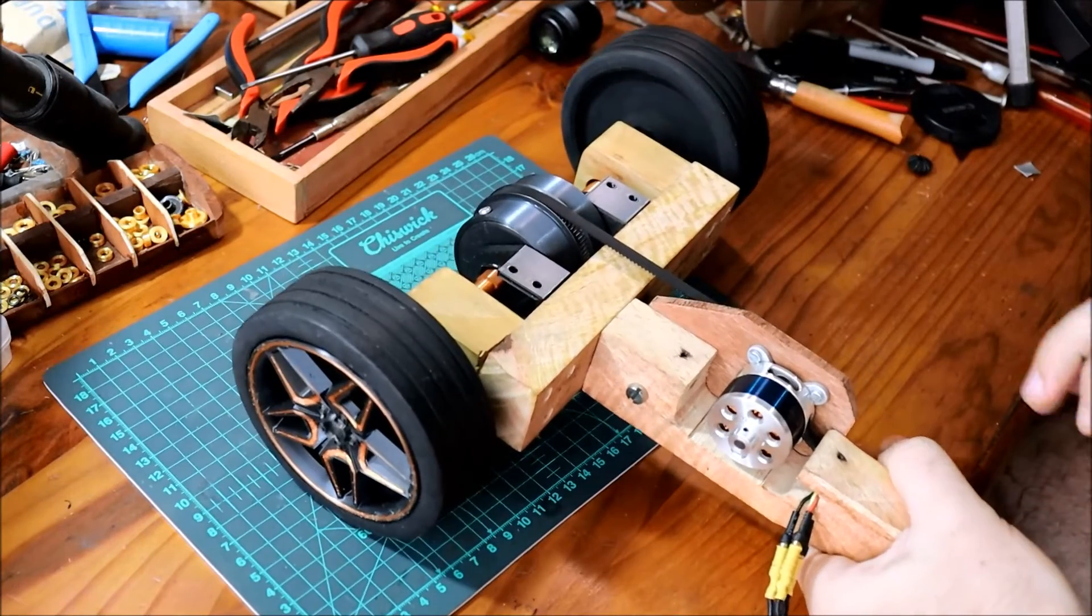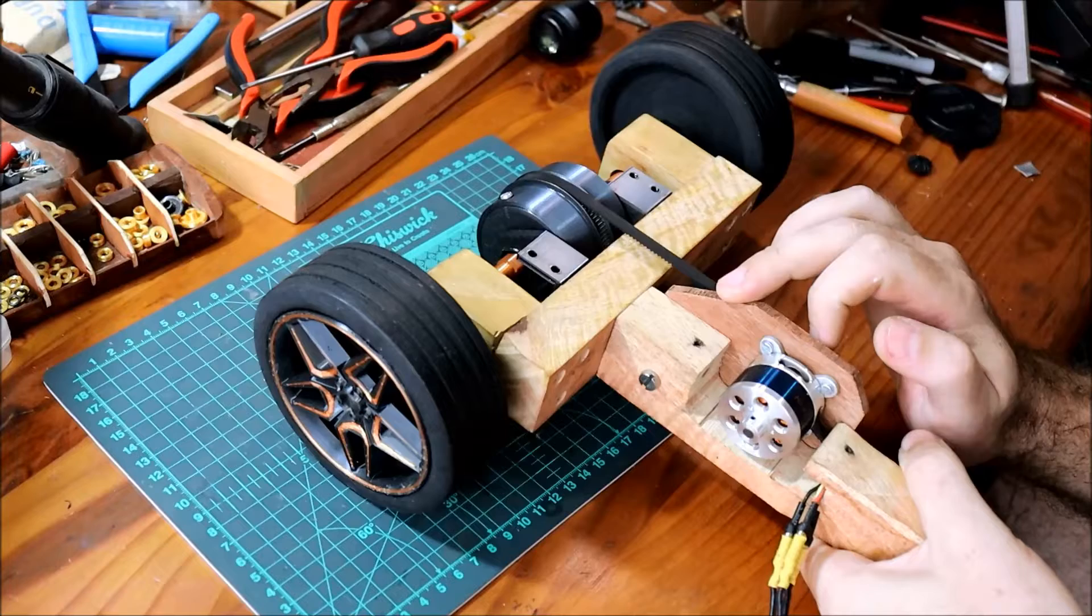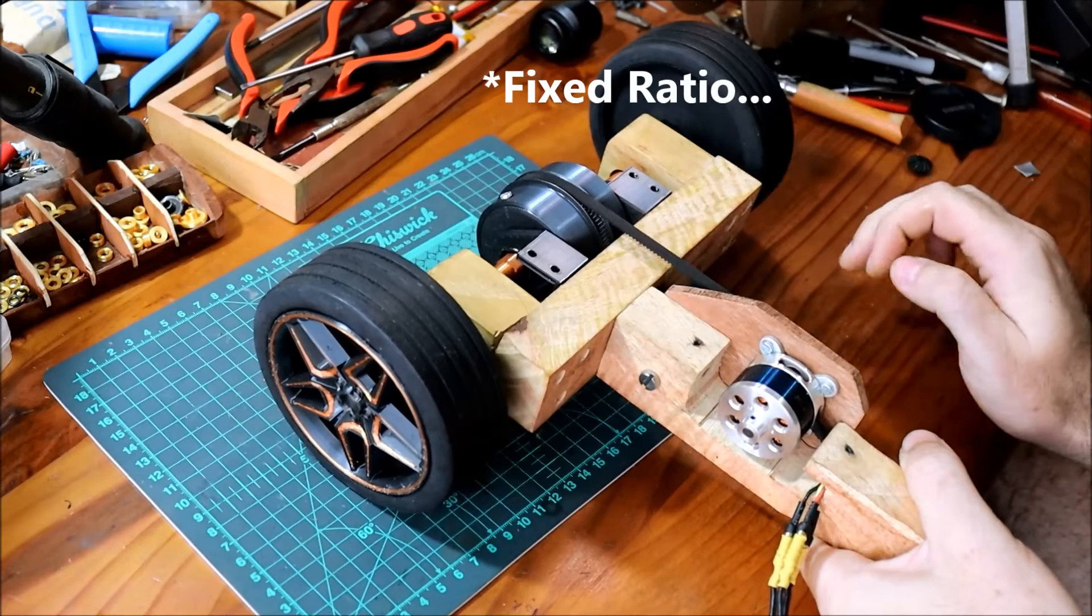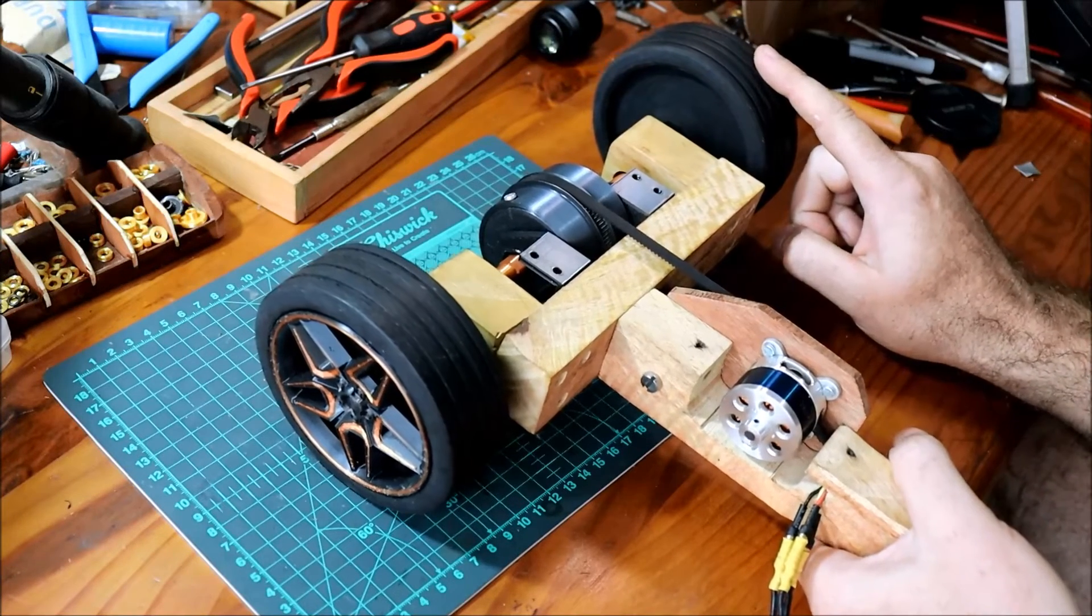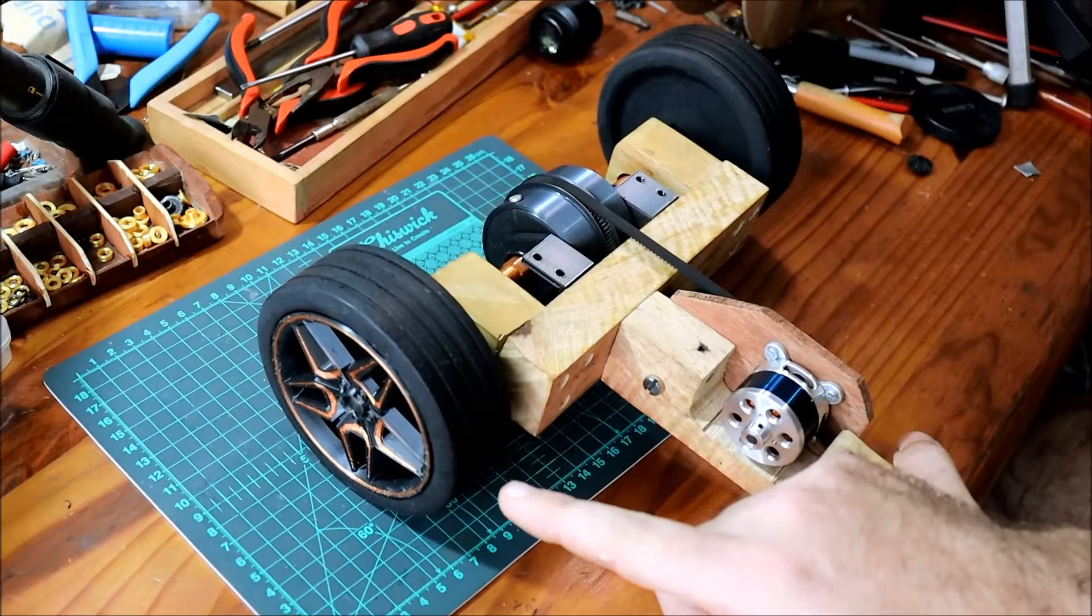Another feature of differentials is that it splits the torque from the motor in a fixed portion between the two wheels. That's why if one wheel loses traction the torque going to the other wheel also disappears.